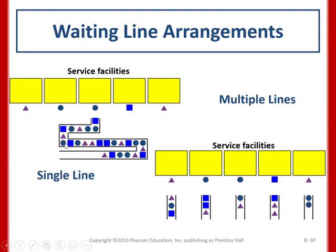In a single line, there is only one queue — for example, queuing in a bank where all customers wait in one line to reach multiple tellers. In a multiple line arrangement, all lines run in parallel, so you can choose which line to join — for example, choosing a cashier station at a supermarket that has five open cashiers.